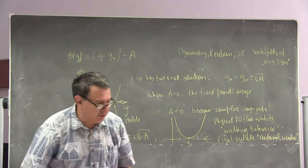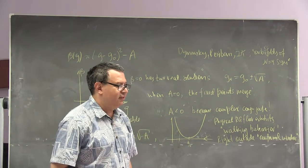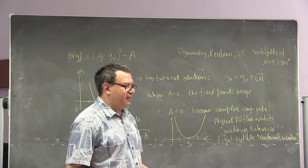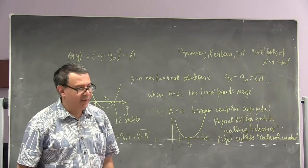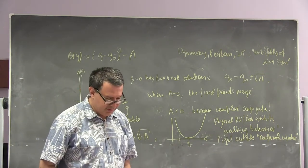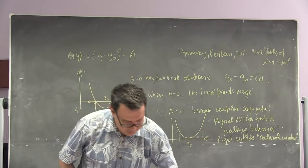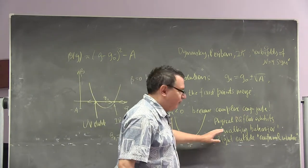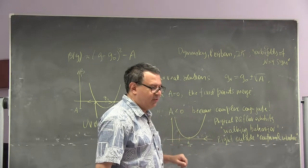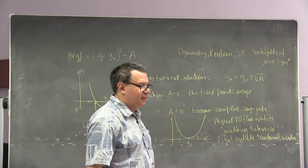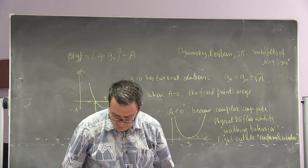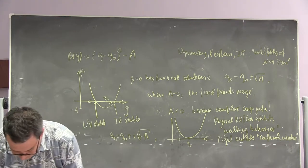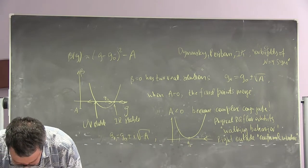None of these issues come up in the Gross-Neveu-Yukawa model — there, everything is perfectly stable and real, and that defines a fully conformal field theory for any number of flavors. Now let me come back to the story with non-abelian gauge fields and the 't Hooft limit.